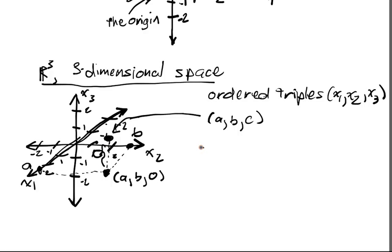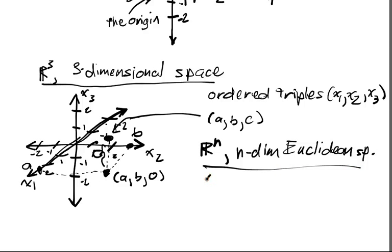Now, this is the last dimensional space, last Euclidean space that we can actually represent graphically in a really nice way. The latter spaces are called Rⁿ, and they're n-dimensional Euclidean spaces. And we represent them as ordered n-tuples now.